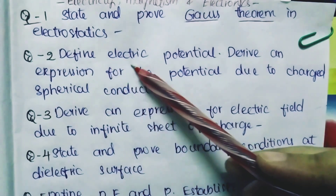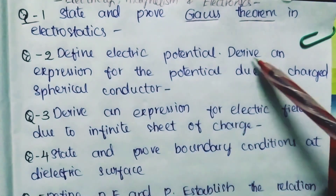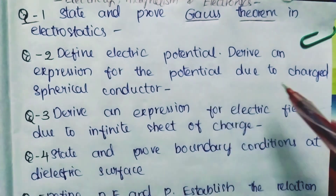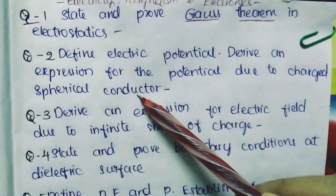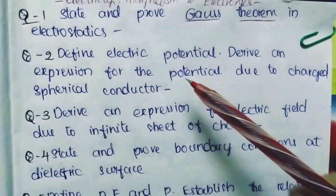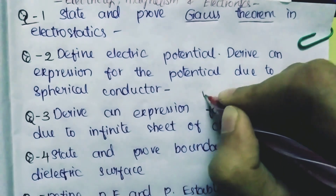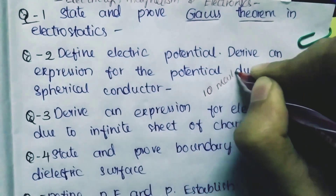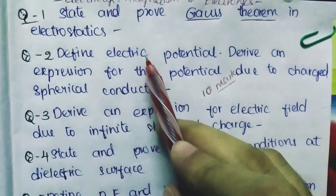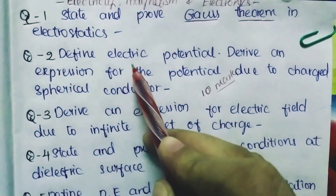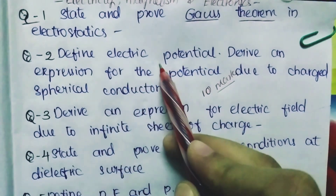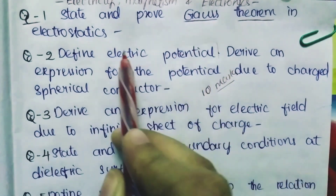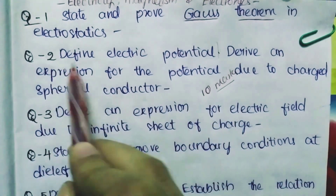Question Number 2: Define electric potential and derive an expression for the potential due to a charged spherical conductor. This is definitely a 10-mark question. Within this question, there are two parts - first, define electric potential, which alone gives 5 marks.